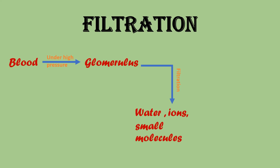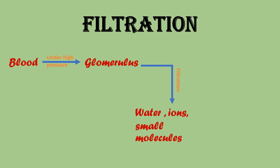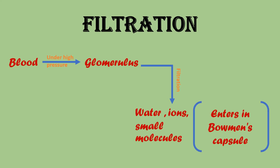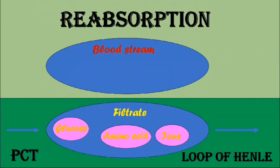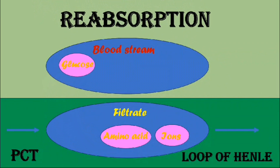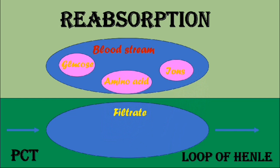Now let's see the functions of nephrons. Filtration: blood enters the glomerulus under high pressure, causing water, ions, and small molecules to be filtered into Bowman's capsule, forming the initial filtrate. Reabsorption: essential substances like glucose, amino acids, ions, and most of the water are reabsorbed from the filtrate into the bloodstream along the PCT and the loop of Henle.